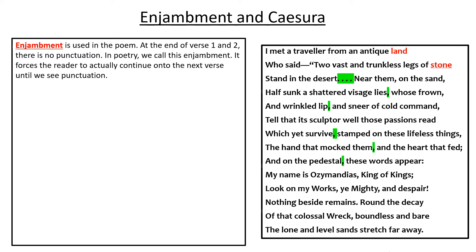In poetry this is significant because it has an effect. There is a reason why the poet has neglected the use of punctuation at the end of the verse. And if you want to get grade 9, what you need to do is be able to speak about the effect of the enjambment — not just the fact that the enjambment is present, but the effect of it.